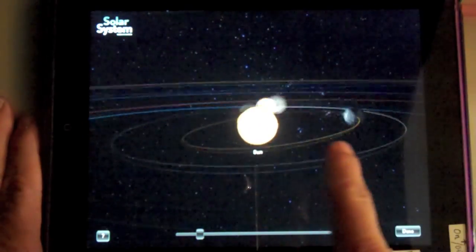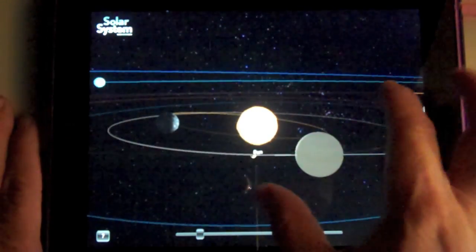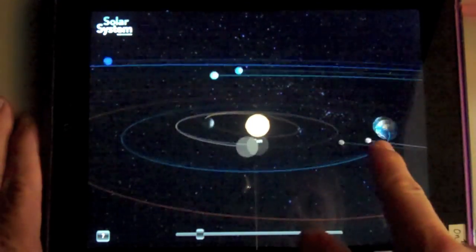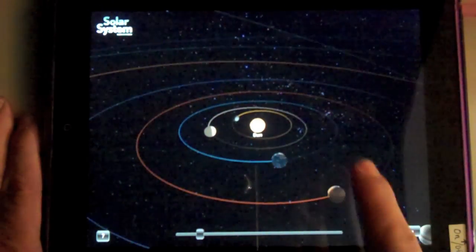This is what I like to think of as a virtual manipulative. So I can take an abstract concept and let a kid play with it with their finger. This is cognitive gold because it just makes the connections.